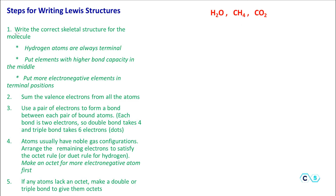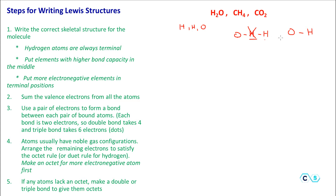First, we're going to write the correct skeletal structure — how we arrange the two hydrogens and the oxygen in the molecule. Hydrogens go on a terminal position because they can only make one bond, so they cannot be in the middle. The atoms with higher bond capacity go in the middle. Higher bond capacity means how many bonds the element makes to satisfy the octet rule. Oxygen can make two bonds, so it goes in the middle.